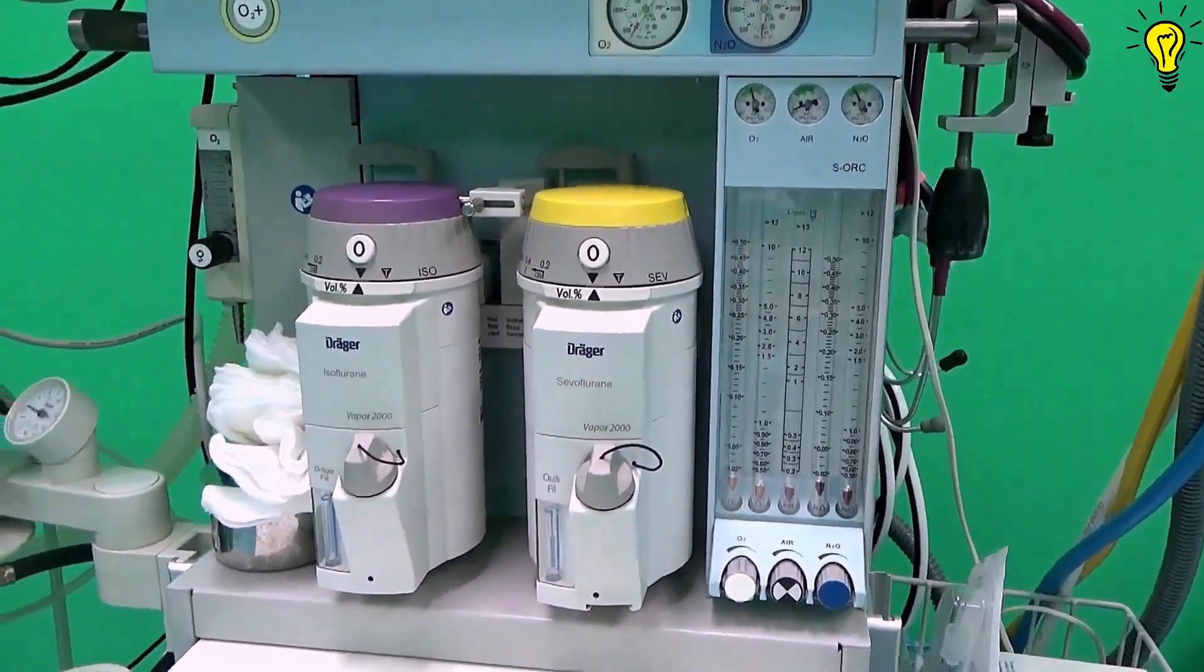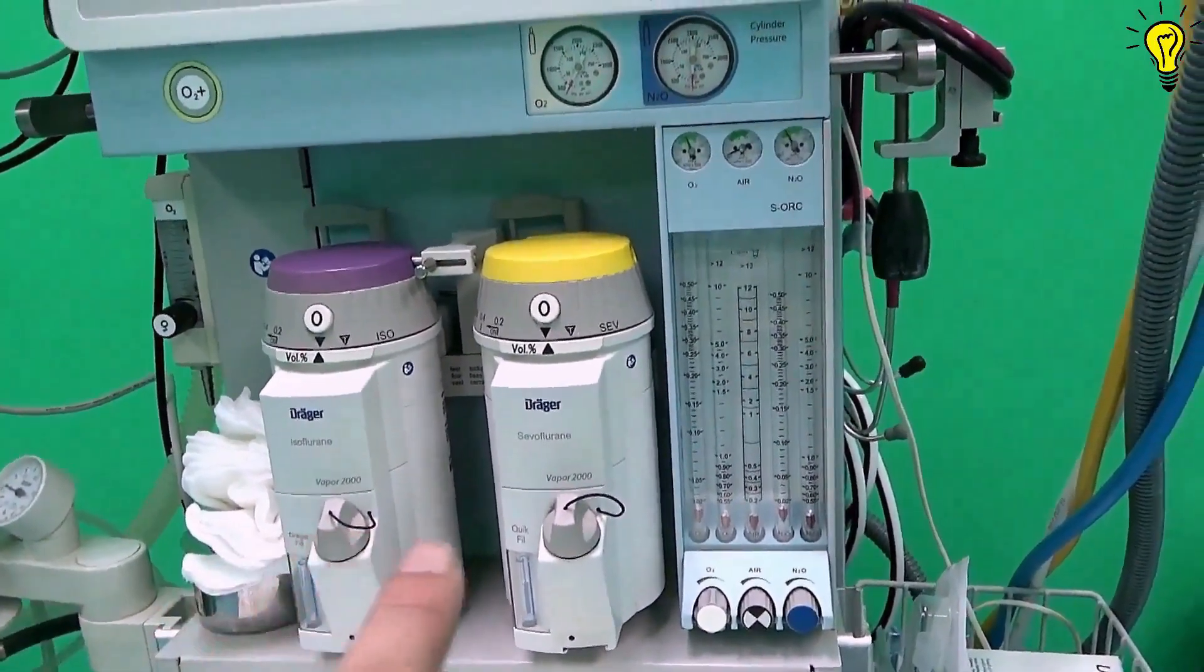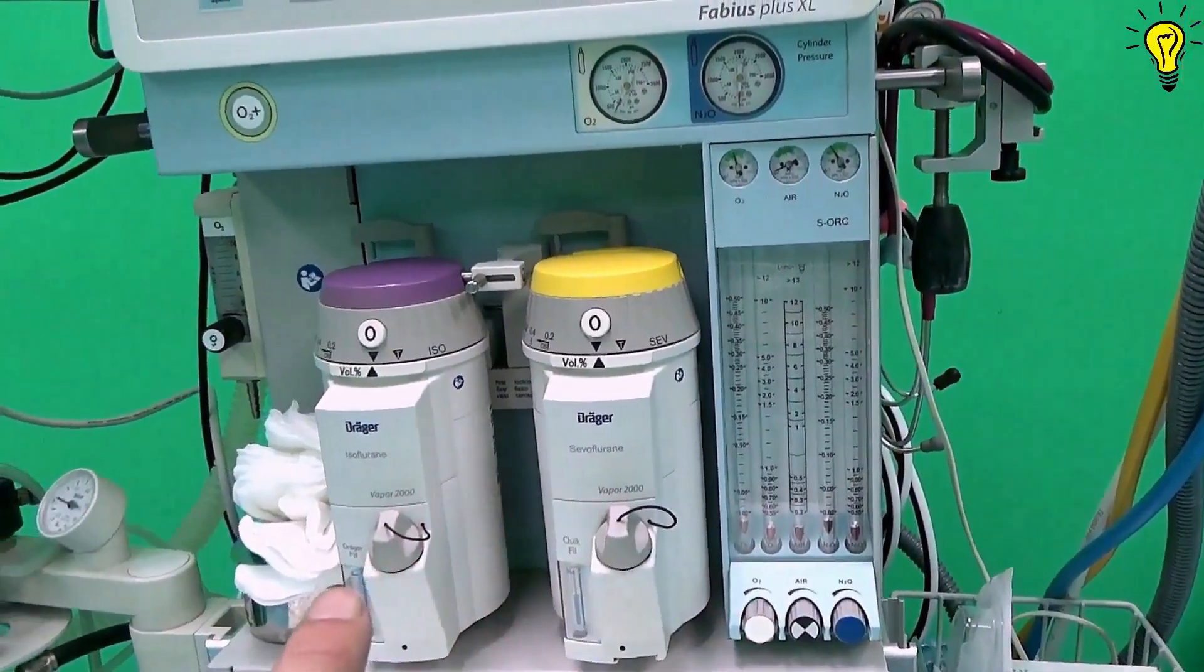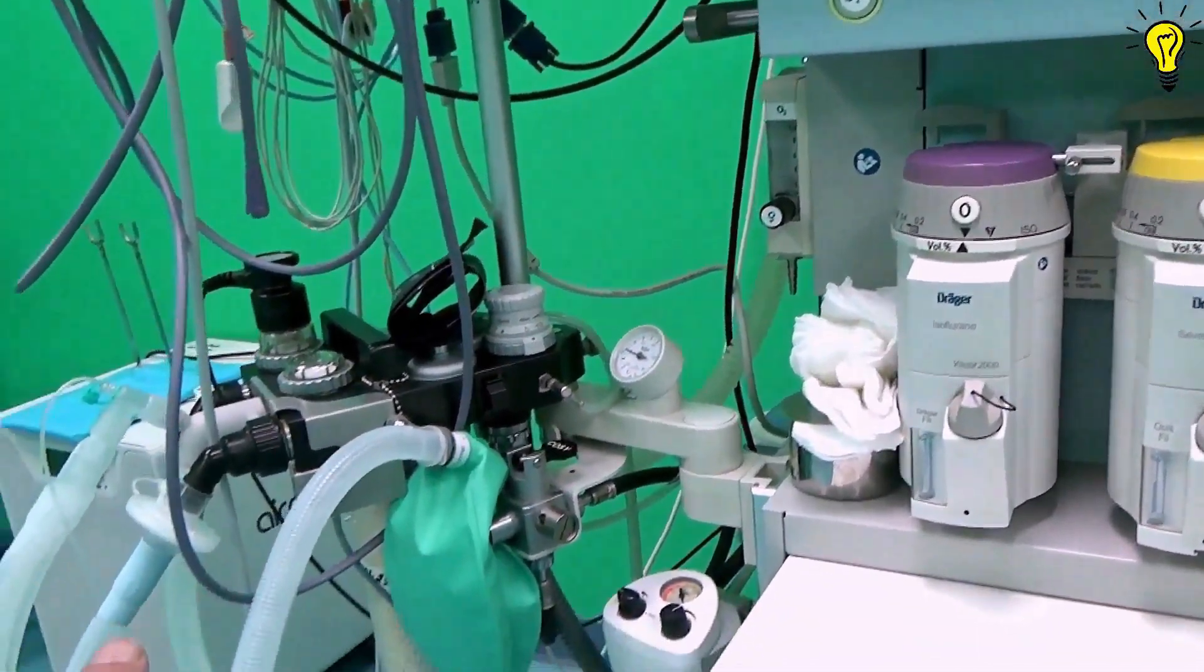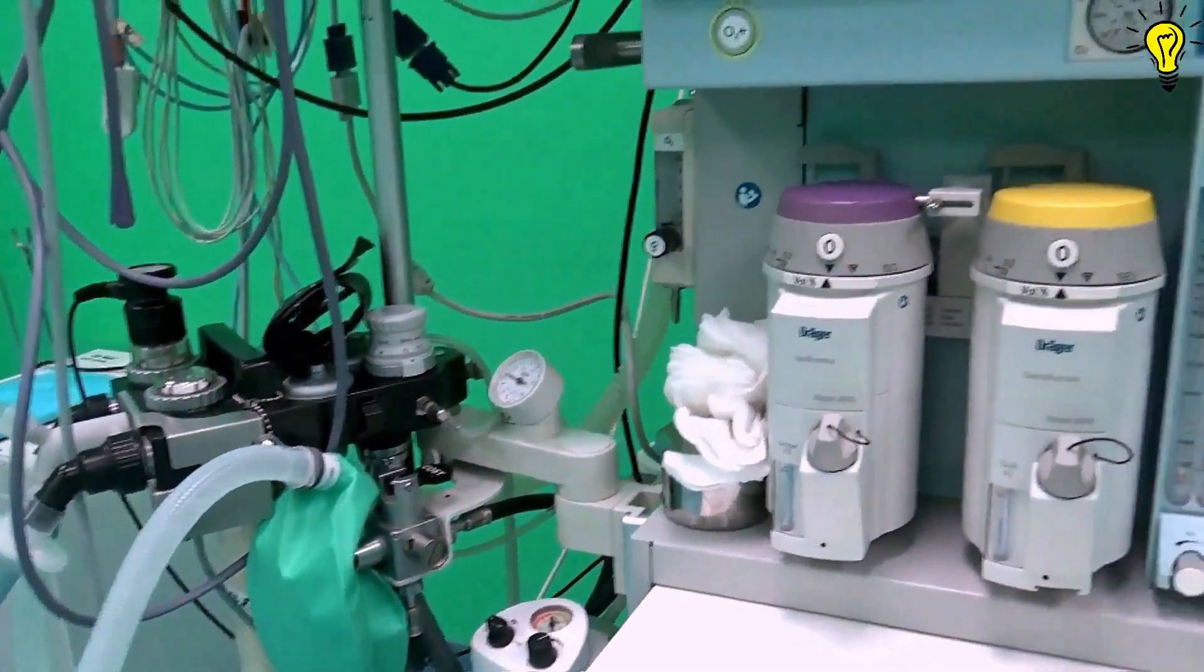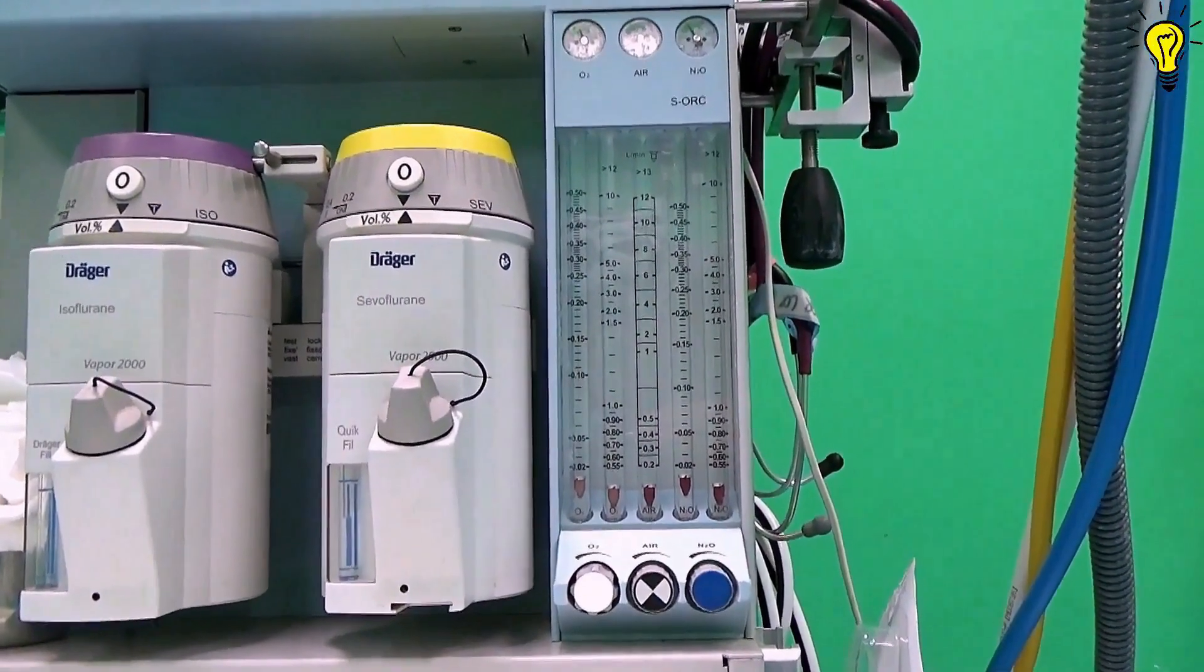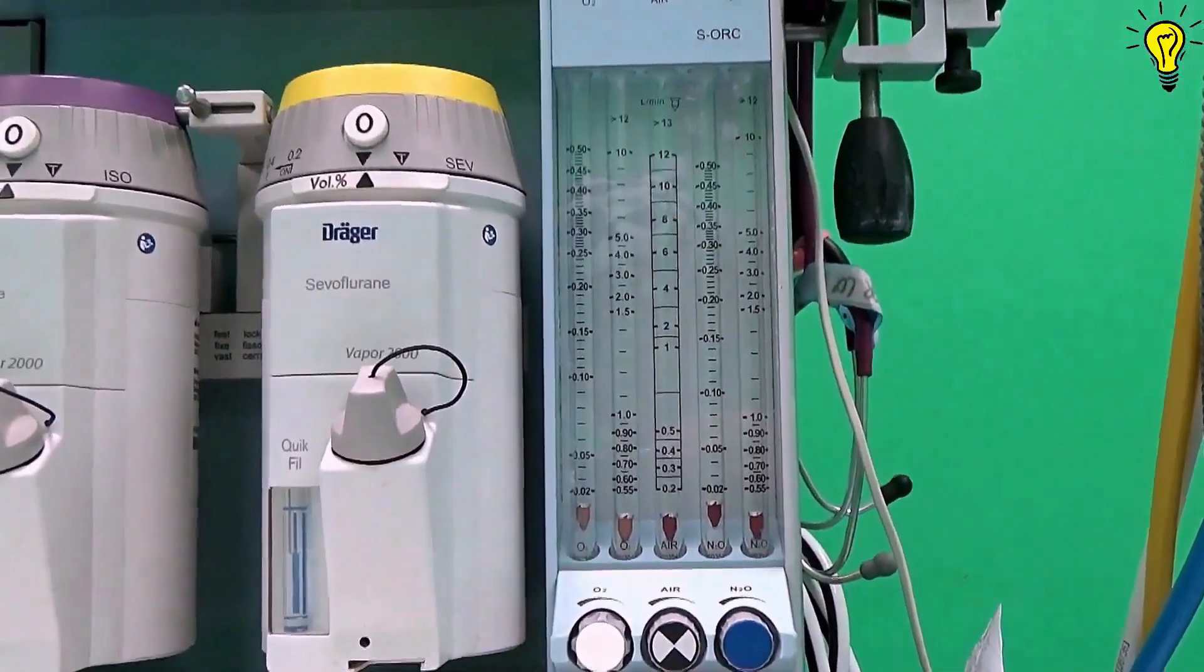Low pressure zone, the system most detailed and most susceptible to leaks, starting from the flow meters to vaporizers to the circuit. We will divide low pressure zone into a series of episodes to cover all. Let's begin with the flow meters then.